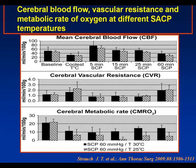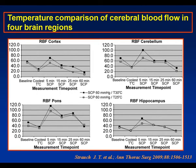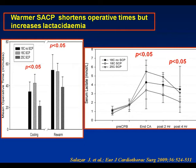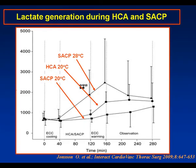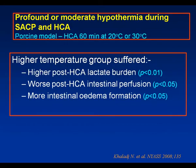Clinically, warmer SACP shortens operative times. Data from Salazar published last year compared 18 degrees centigrade SACP with 25 degrees centigrade SACP, and in the 25-degree group they saw shorter cooling and re-warming periods as expected, but higher serum lactate generation — a potentially adverse clinical effect. When Johnson et al. looked at microdialysis in an experimental model, they saw higher brain tissue lactate generation with higher SACP temperatures. In a porcine model looking at visceral effects, higher temperatures had a higher post-circulatory arrest lactate burden, worse intestinal perfusion, and more intestinal edema.